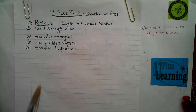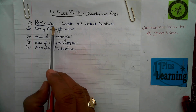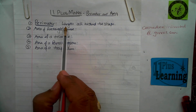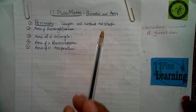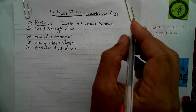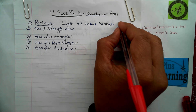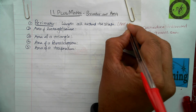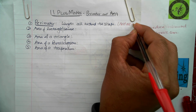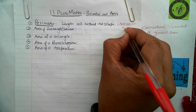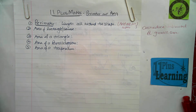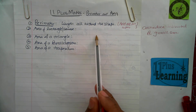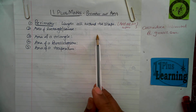Okay, time to check and learn. Perimeter is the length all around the shape. To find or calculate the perimeter, we add all the sides which make a shape. So all we need to know for perimeter is the length of all the sides.